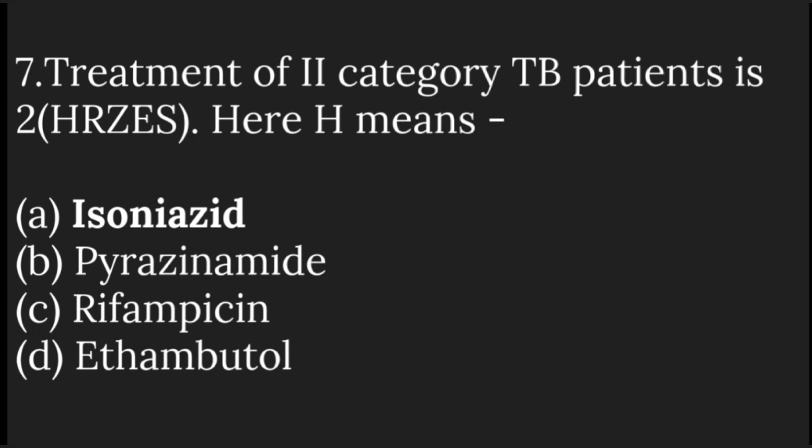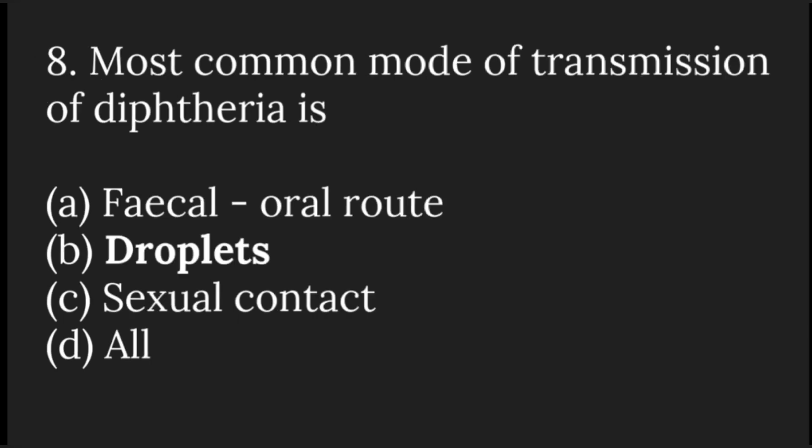In the treatment of second category TB, H means isoniazid. The most common mode of transmission of diphtheria is droplet infection.